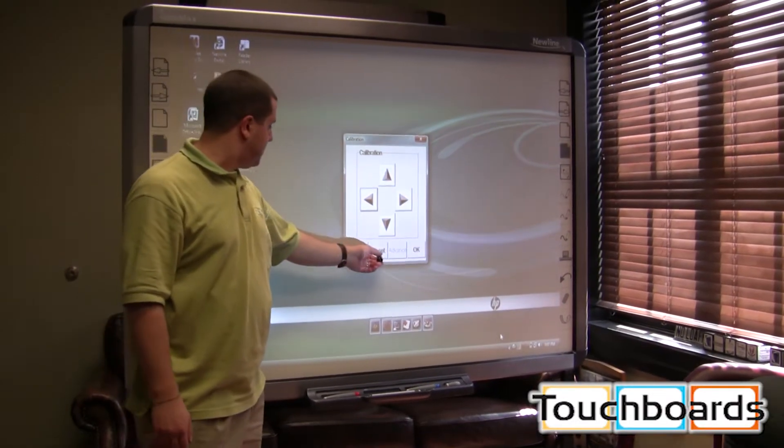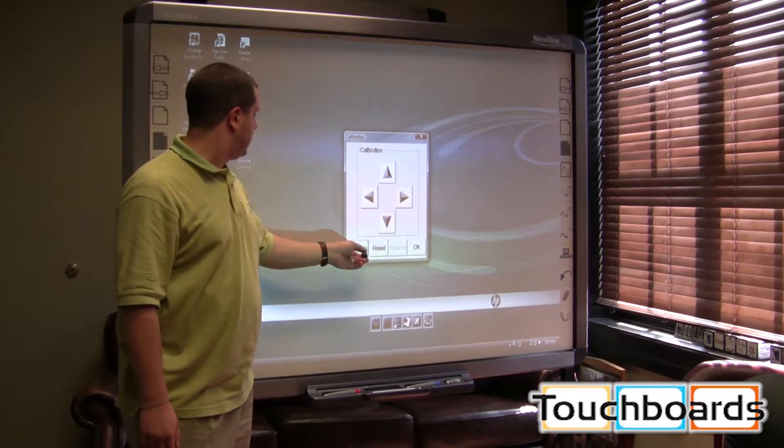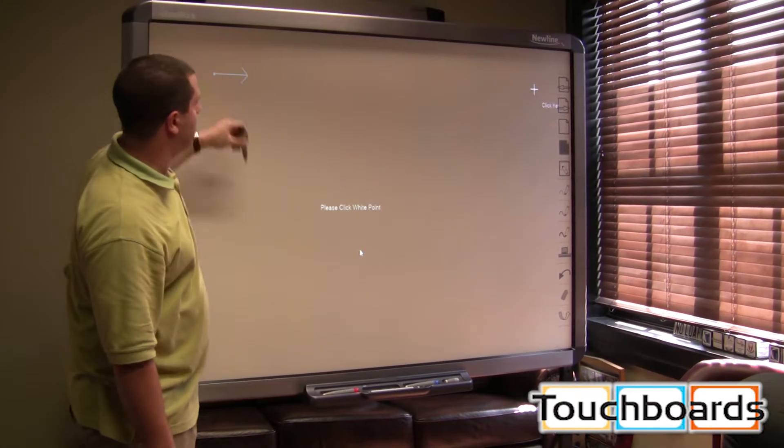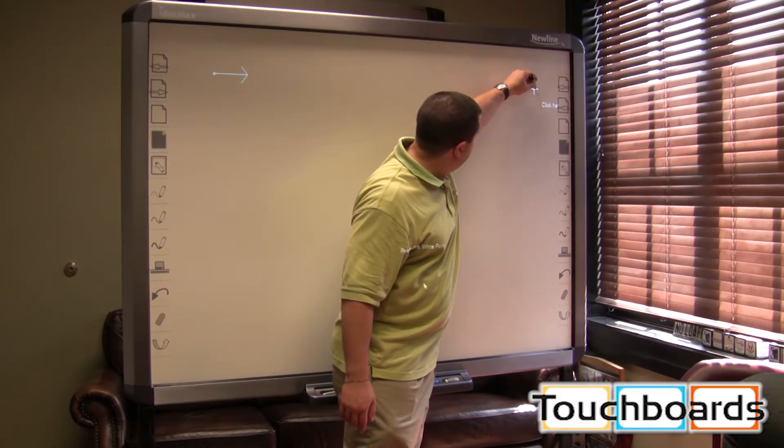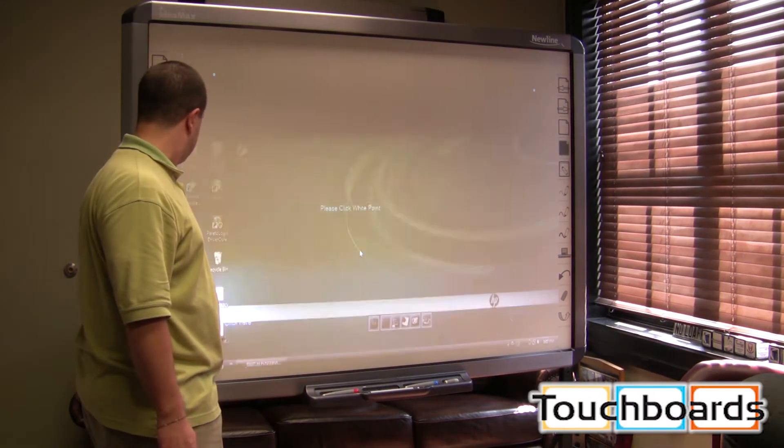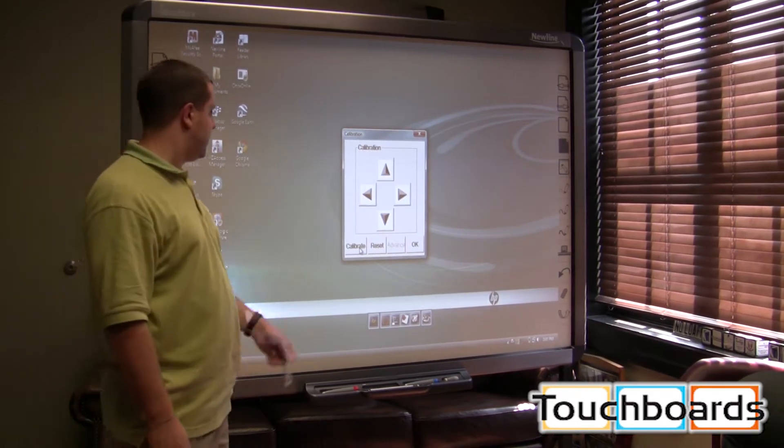What we're going to do is reset the calibration to clear off any old calibration and then calibrate. We just touch each of these crosshairs in the center, and that's going to ensure that the mouse cursor is right where we're touching on the board.